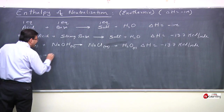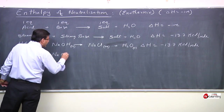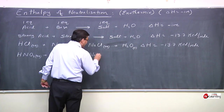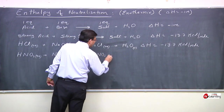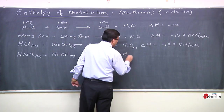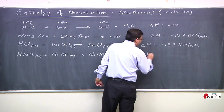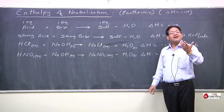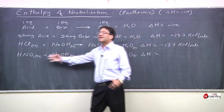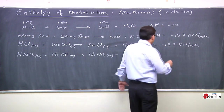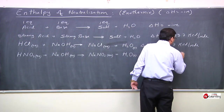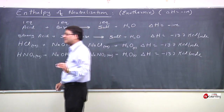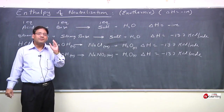Now if we change the acid — first we used HCl, now we use HNO₃ — but we are still using a strong acid. In the enthalpy of neutralization there is no difference. It will remain the same: minus 13.7 kcal per mole.